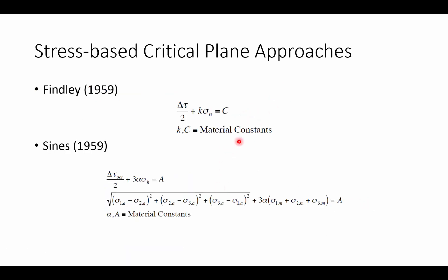Other approaches include Findlay in 1959, which has two material properties — a lowercase k and c — and Sines' model in 1959, which is a more complex approach that introduces a type of von Mises stress equation inside of the Sines approach.